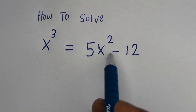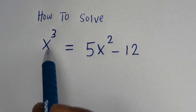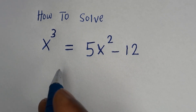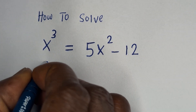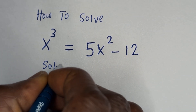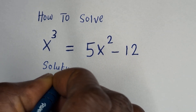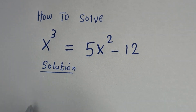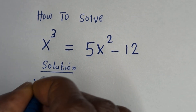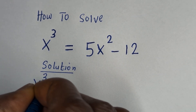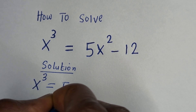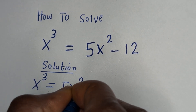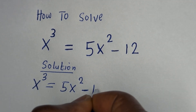Hello. How to solve for s in this equation: s raised to power 3 is equal to 5s squared minus 12. Solution. We have the given equation s raised to power 3 is equal to 5s squared minus 12.